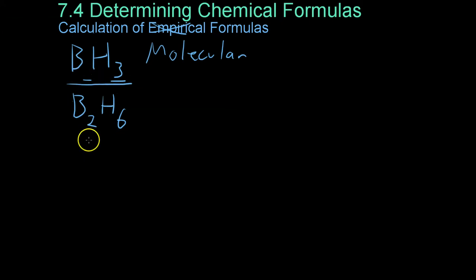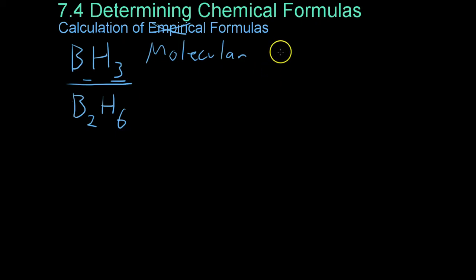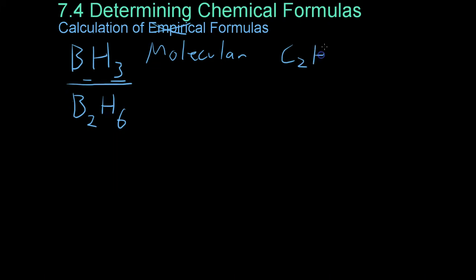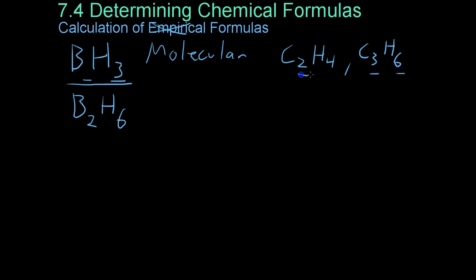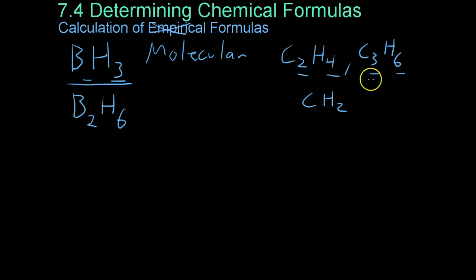However, there are some complications because some compounds, such as ethene, which is C2H4, and C3H6, if you look at the ratio between the atoms in each compound and simplify them, you'll see that they have a 1 to 2 ratio of carbon to hydrogen. However,